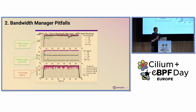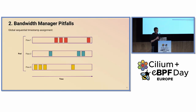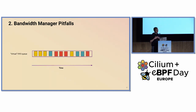We realized the remaining latency increase may be due to the way the EDT scheduling algorithm works. All packets from all flows coming from a pod get assigned timestamps sequentially and globally in the BPF program. So even though packets may end up in different queues, because of this global timestamp assignment, they end up forming one sort of virtual FIFO queue, which causes the latency increase.